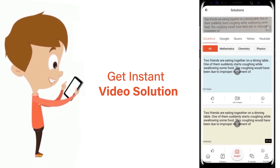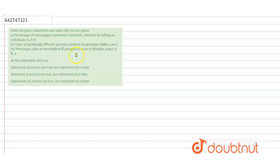Hello students, have a look at the question. The question is: refer to the given statements and select the correct option. Statement one is: percentage of homozygous dominant individuals obtained by selfing a heterozygous individual is 25 percent. Statement two: types of genetically different gametes produced by the given genotype are two. Statement three: phenotypic ratio of monohybrid F2 progeny in case of Mirabilis jalapa is 3:1. We are given four options, some statements are true, some are false, and we have to find the correct option.